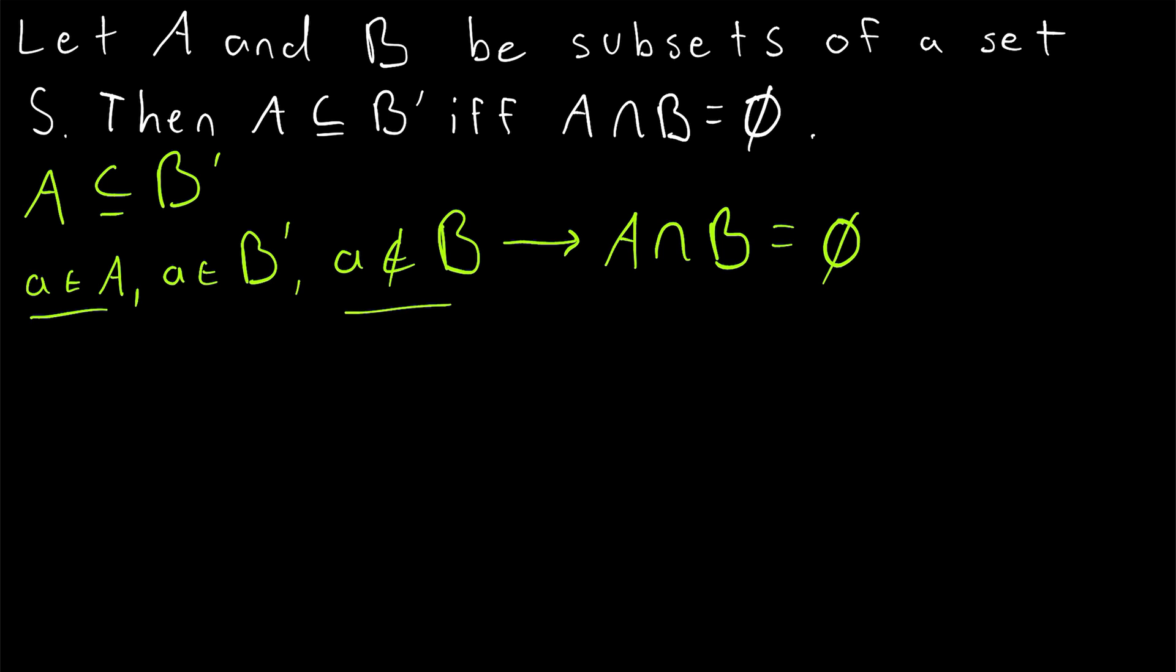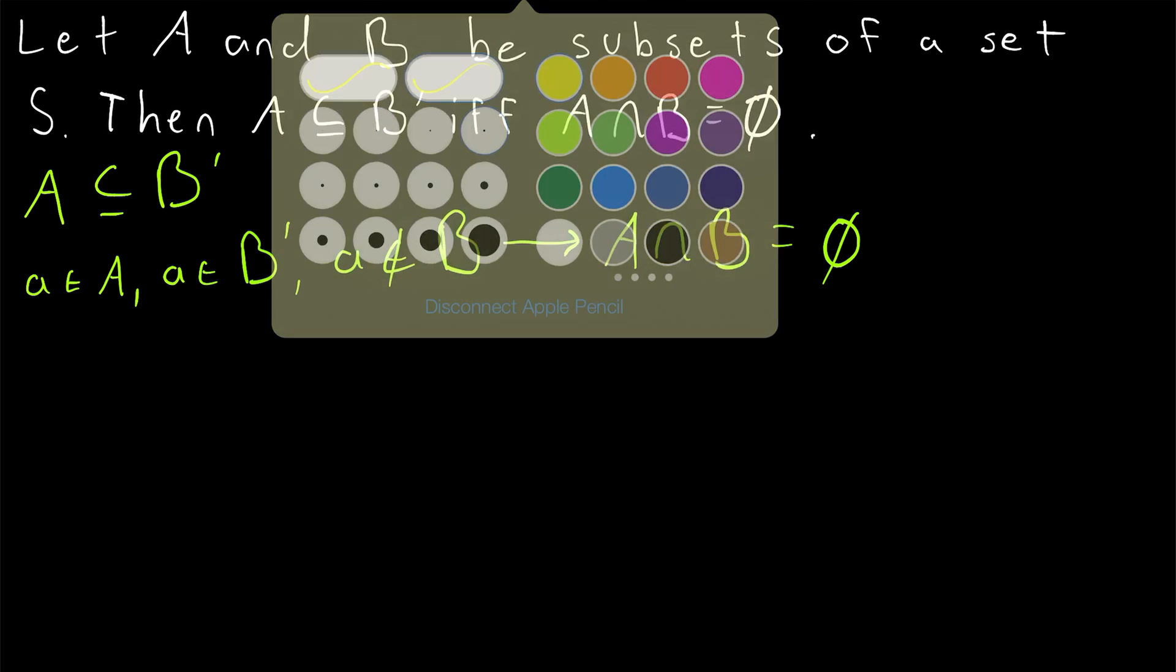we were easily able to show that element cannot be an element of B. Thus, no element of A is also an element of B, hence the intersection of A and B is empty. Now we can go ahead and move on to the other direction.